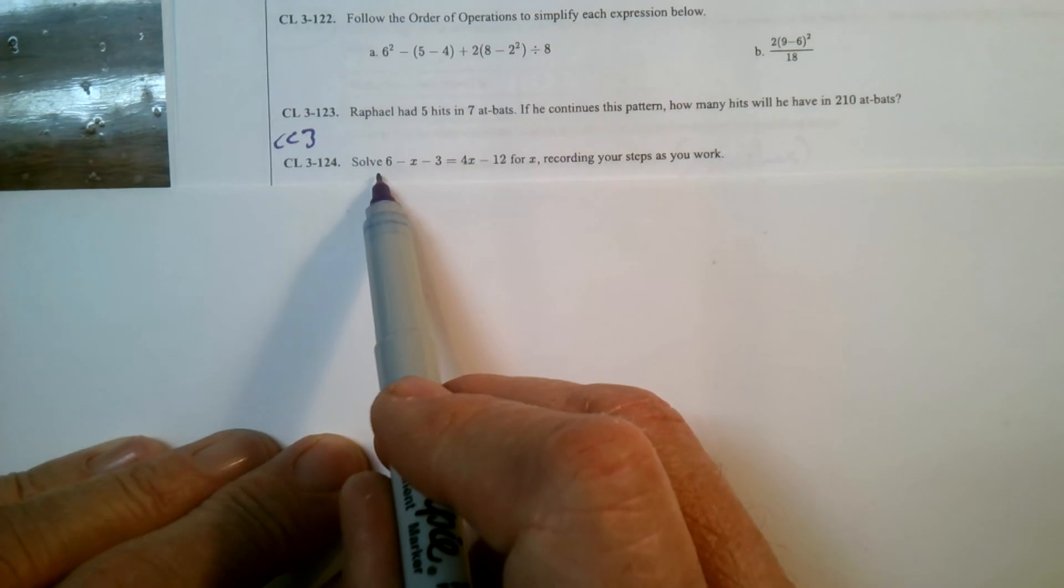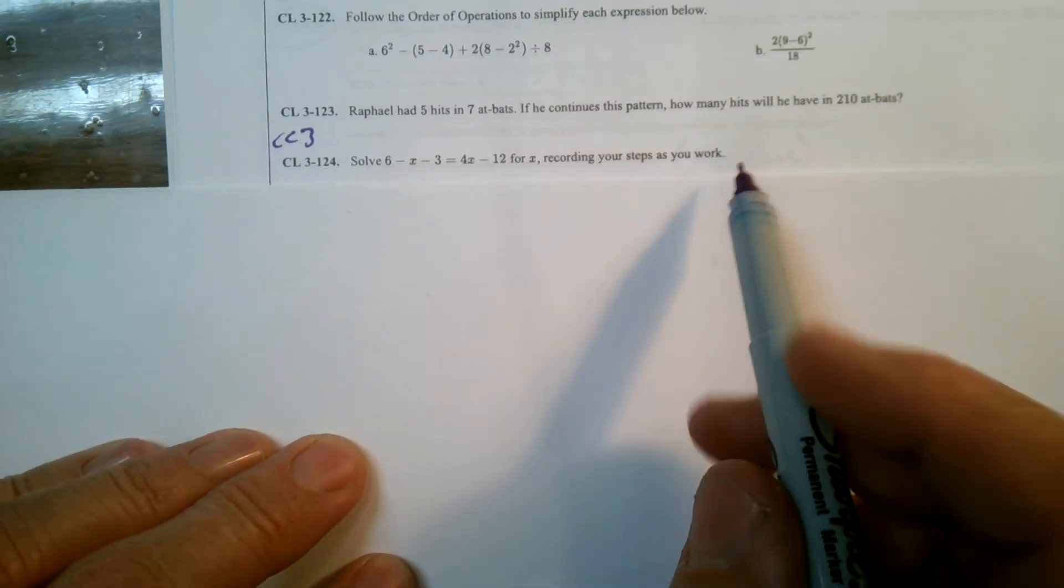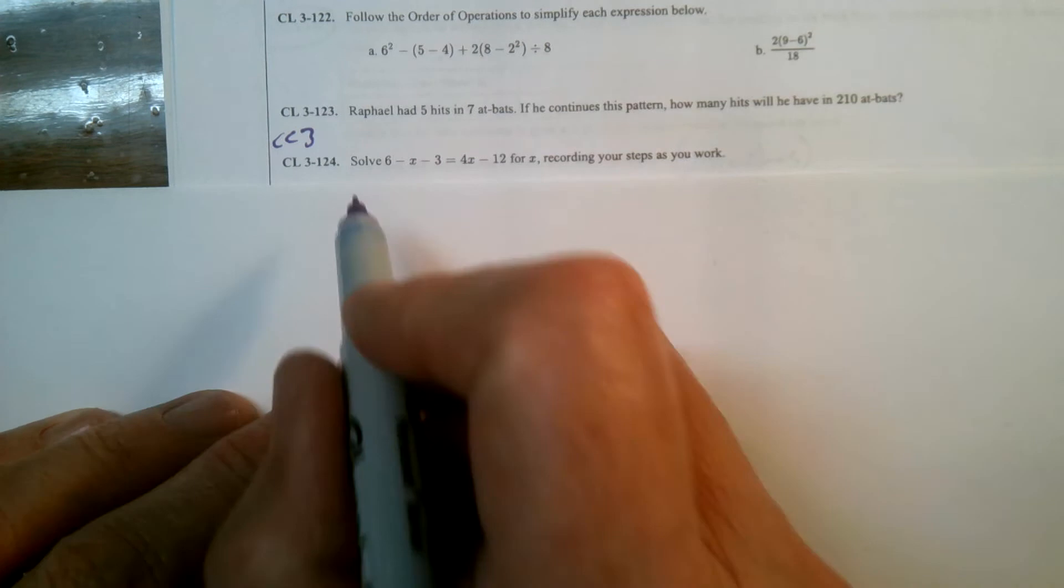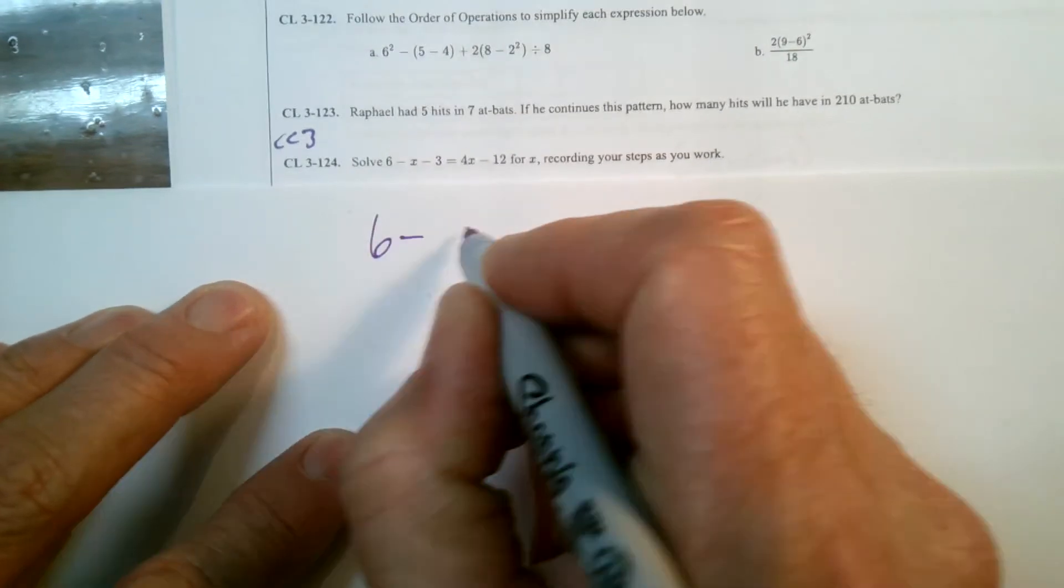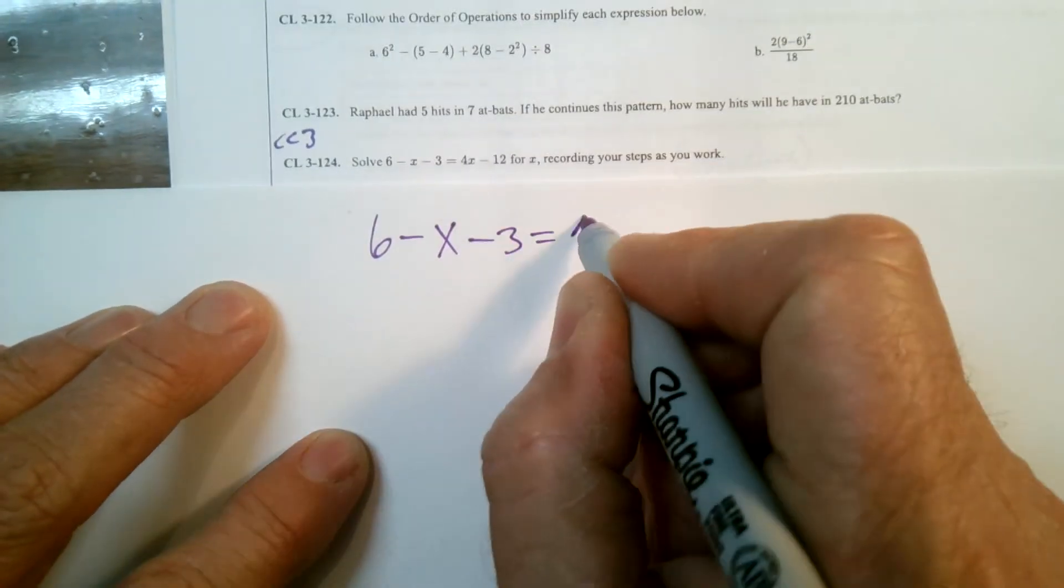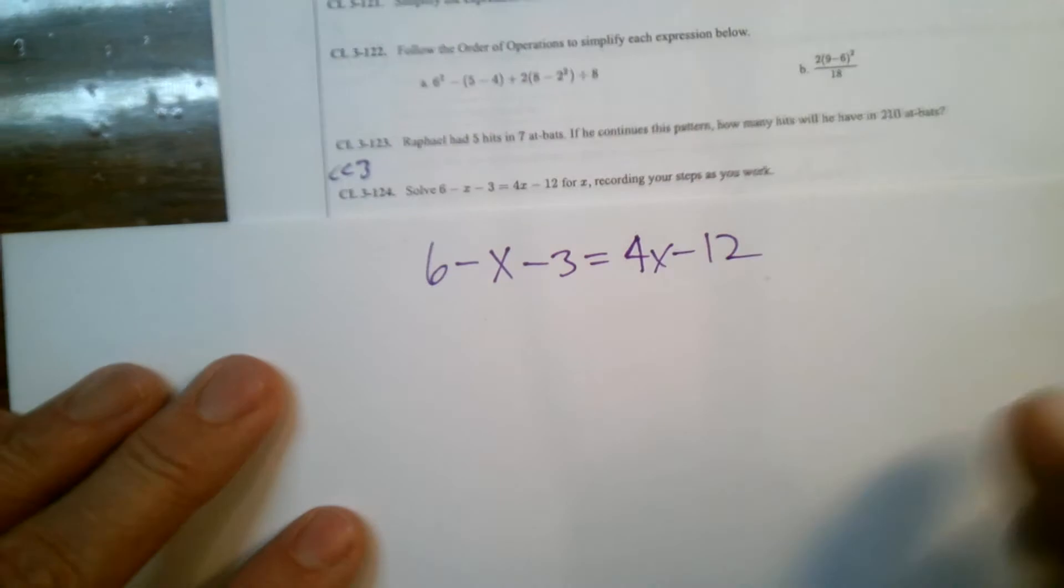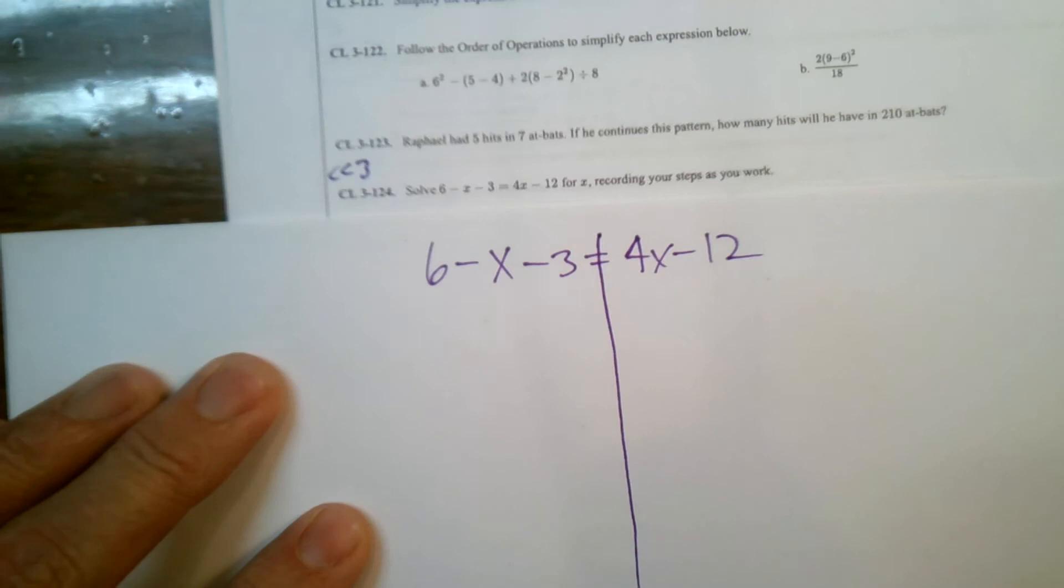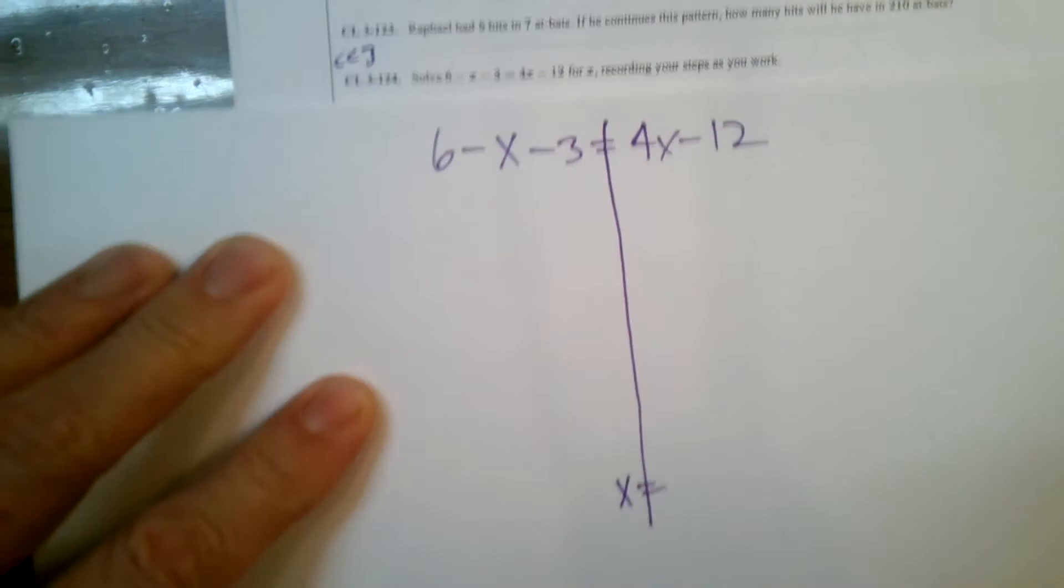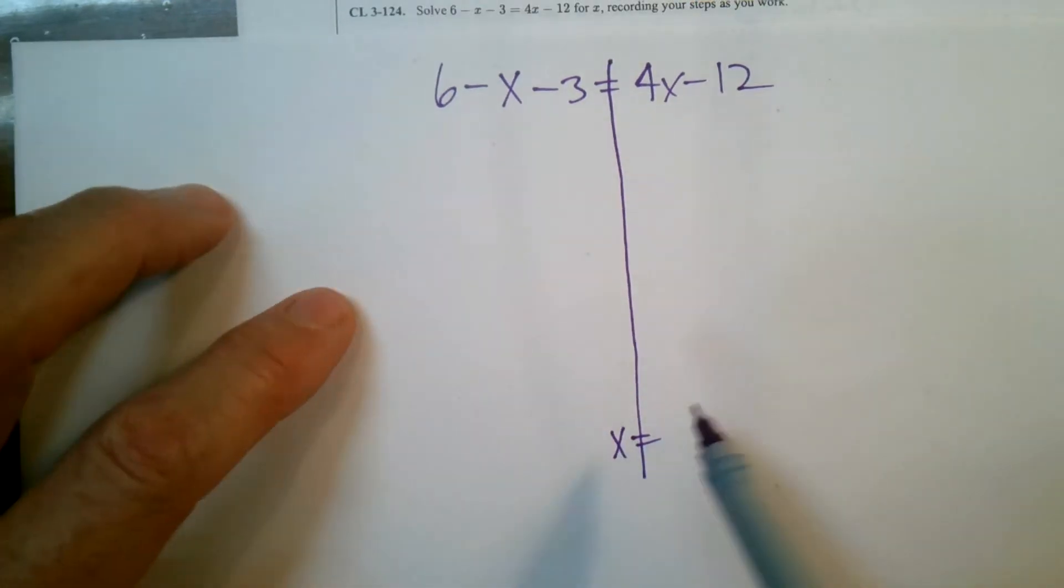I want to solve this equation for X and record our steps to show our work here. So I'm going to rewrite the equation so we see it clearly: 6 minus X minus 3 is equal to 4X minus 12. So I want to solve for X. I want to get this all the way down to where I have my X alone and I'm able to isolate my X and find out what X is.